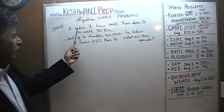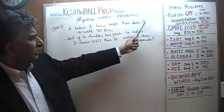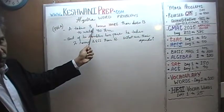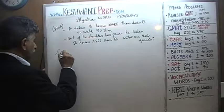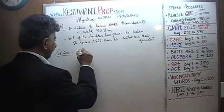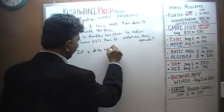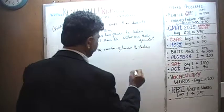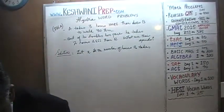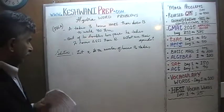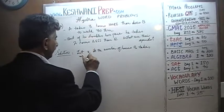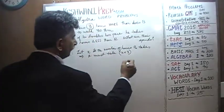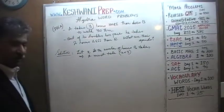So what do we know? We know that A takes three hours more than B. If we can define the amount of time that B takes, then we know A takes three hours more than that. Let X be the number of hours B takes to walk 30 kilometers. If B takes X hours, then A must take X plus three hours, because we are told it takes three hours more.